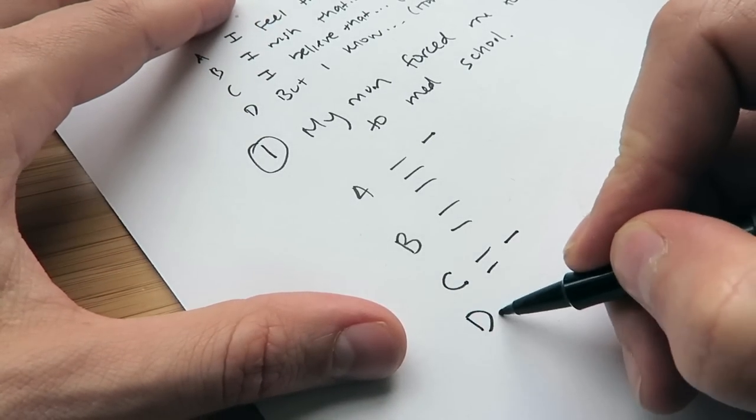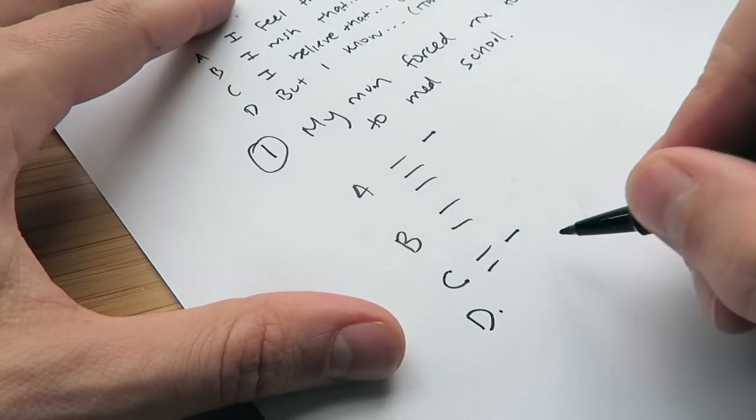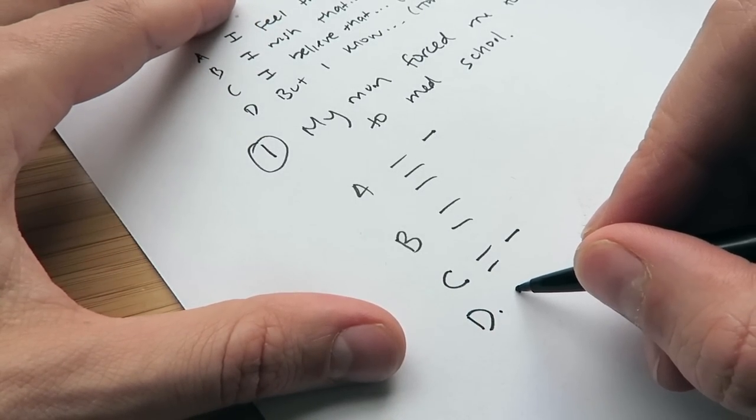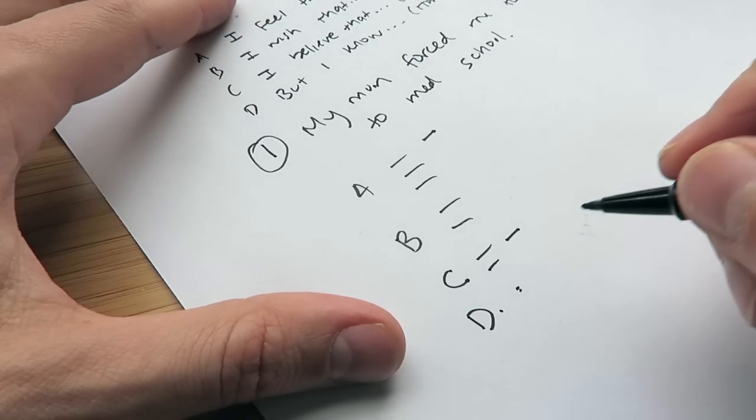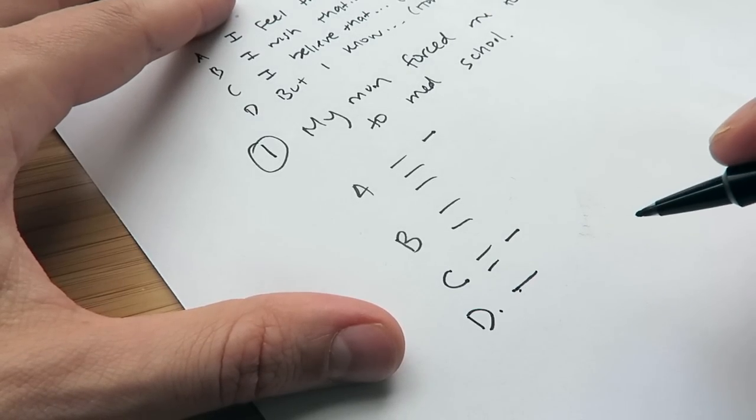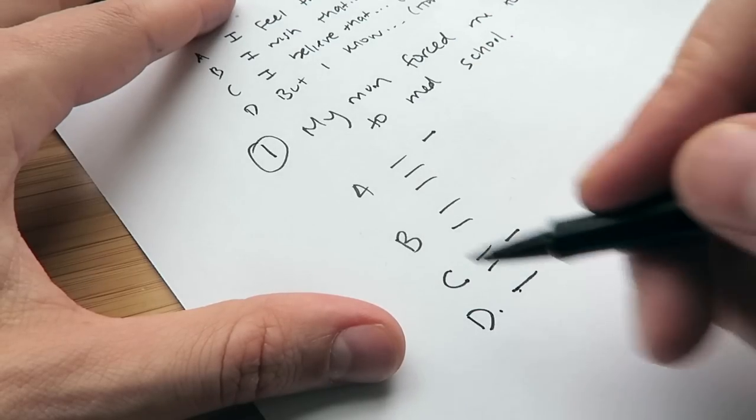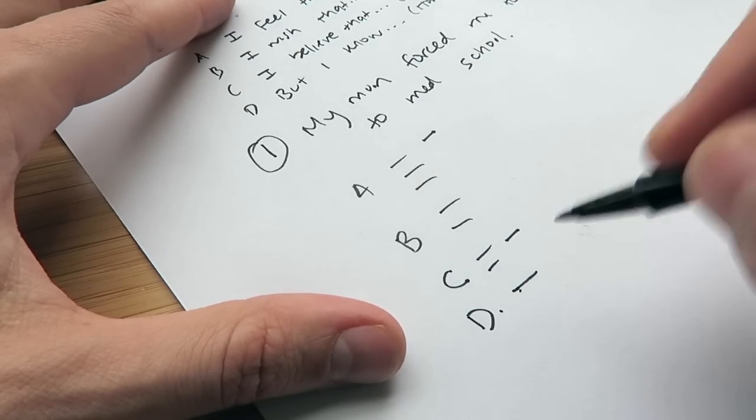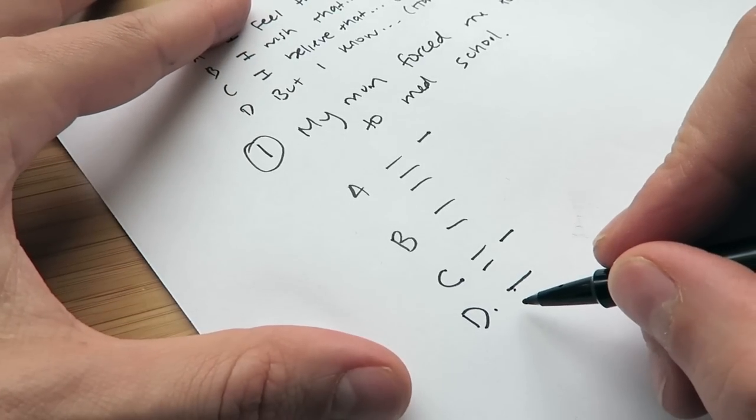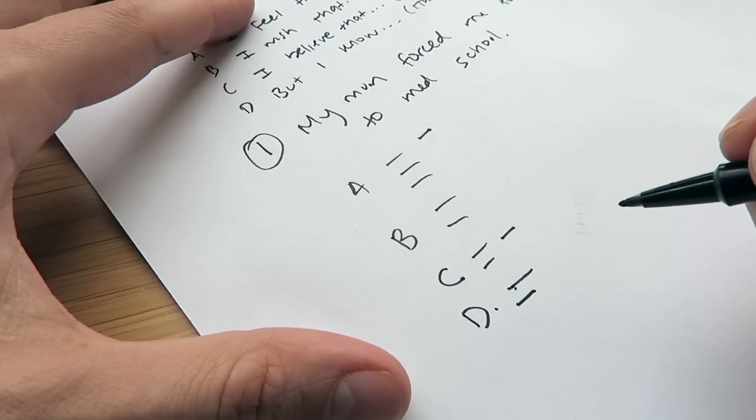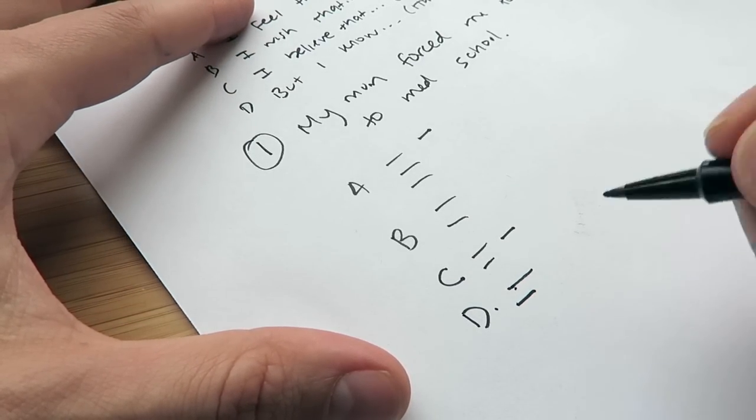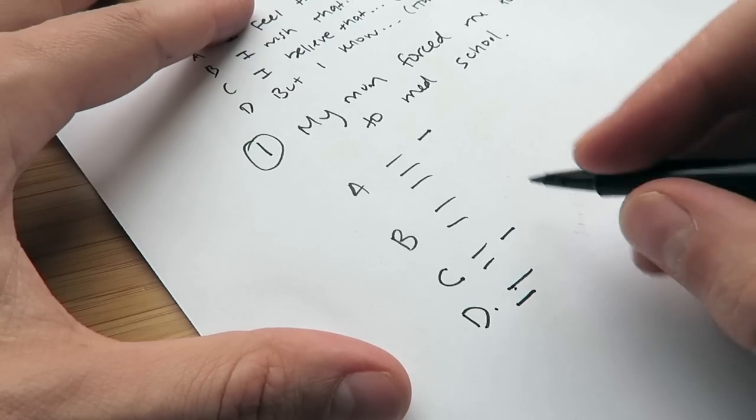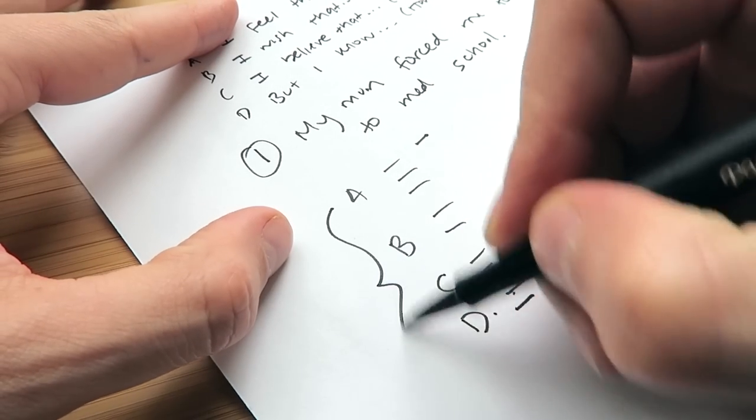And then D, D is always how you will evolve and overcome the challenge. But I know, but I know that it's ultimately my choice. And obviously, write all these out. I'm just doing this to save time. It's ultimately my choice. But I know if I have a serious conversation with them, they'll be forced to at least hear my opinion.